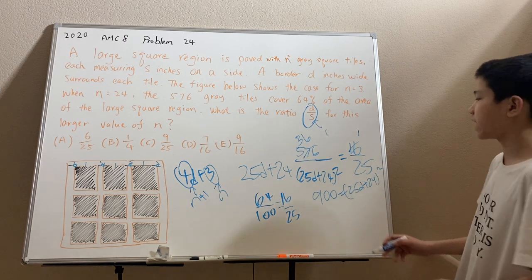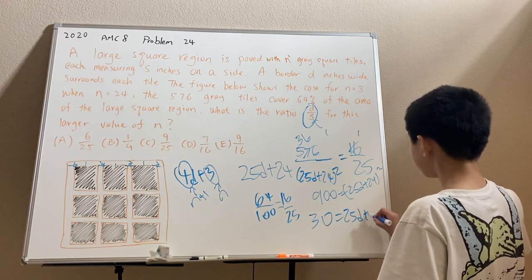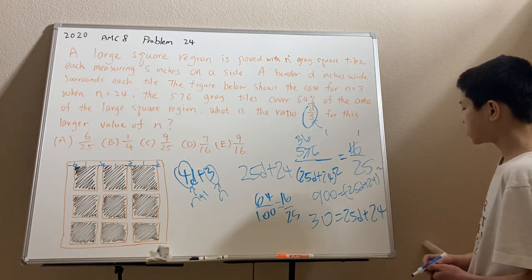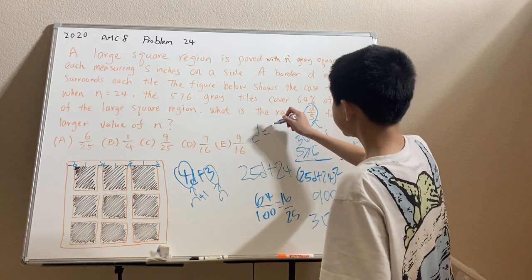And we take a square root of both sides, and we end up with the equation 30 equals 25d plus 24. And we can easily solve this equation to get that d equals 6 over 25.